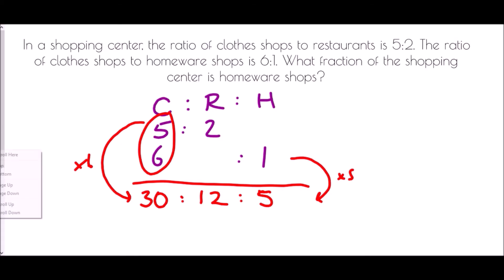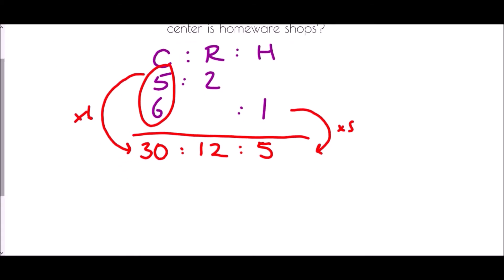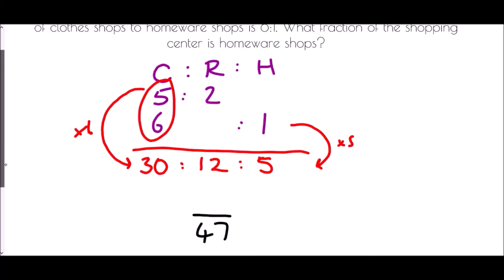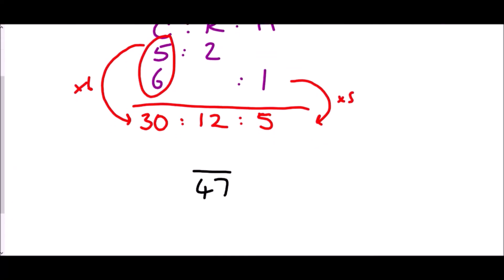The question was about fraction, so we need to know how many we have in total: 30 plus 12 plus 5 is 47 pieces. The question was what fraction is homeware? Homeware is the final part of our ratio, and that is 5. So 5 out of 47 are homeware.